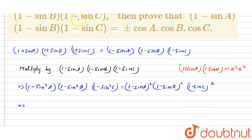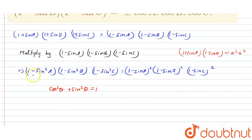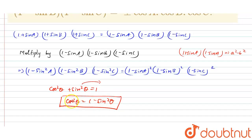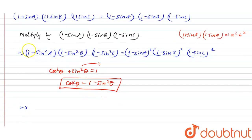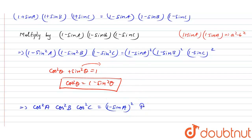Now there is one formula: cos² θ + sin² θ = 1. So in our question we need (1 - sin² A). Therefore, cos² θ = 1 - sin² θ. So wherever (1 - sin² θ) appears, I am going to substitute cos² θ. So (1 - sin² A) = cos² A, (1 - sin² B) = cos² B, and (1 - sin² C) = cos² C. This equals (1 - sin A)²(1 - sin B)²(1 - sin C)².